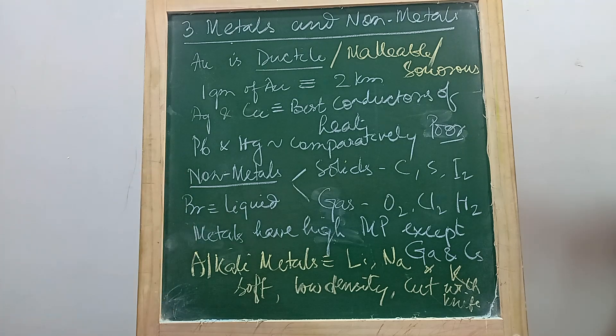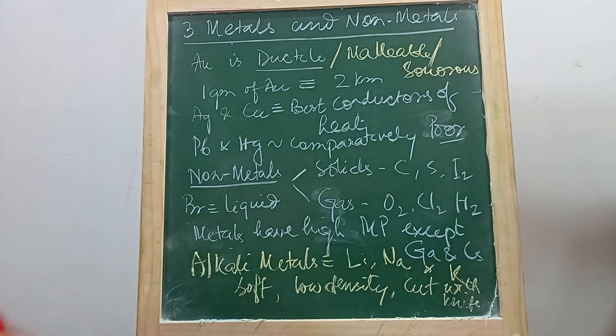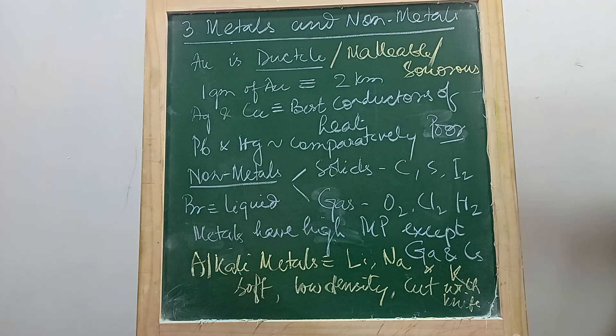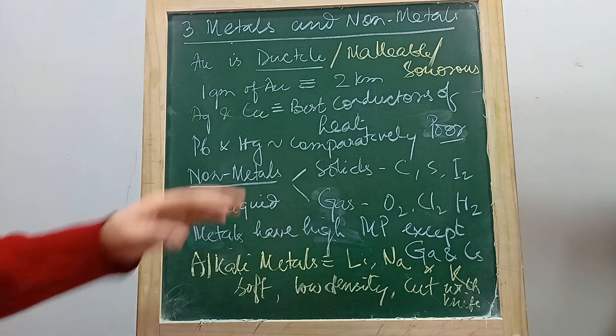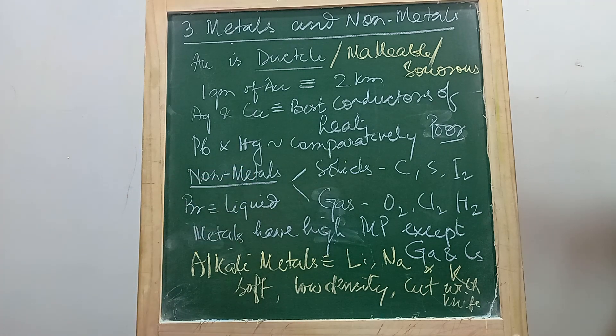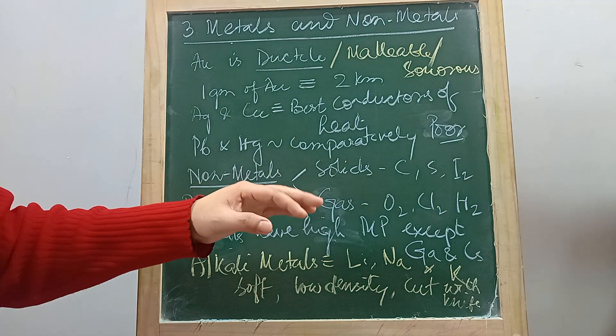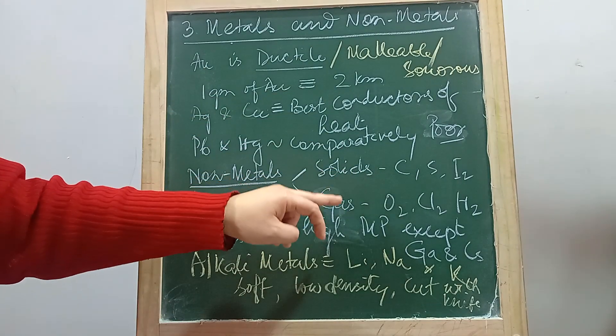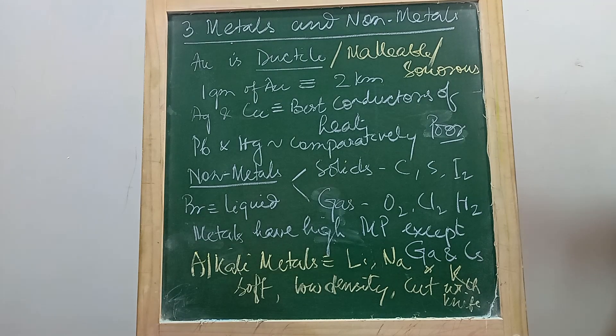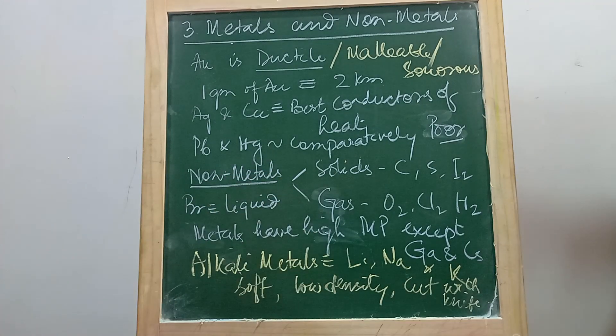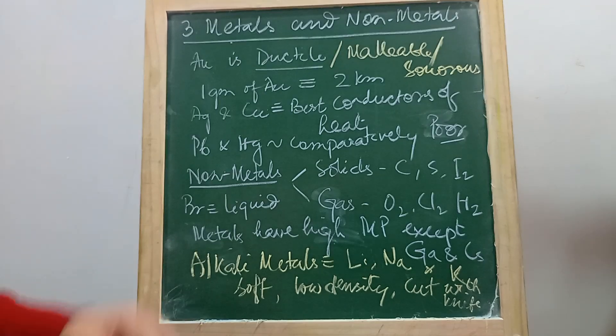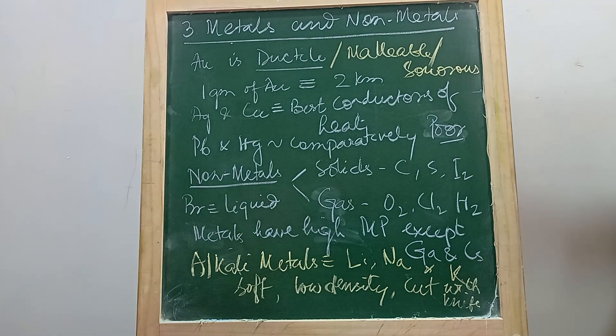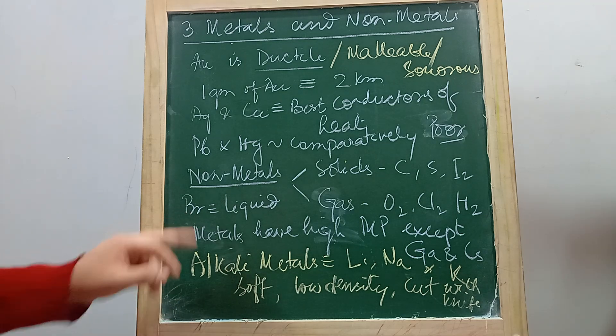All the metals are in solid state except for mercury, which exists in liquid state. Now non-metals, they can exist, most of them exist not only as solids, but there is one exception. A non-metal which exists in liquid state at room temperature, that is bromine.